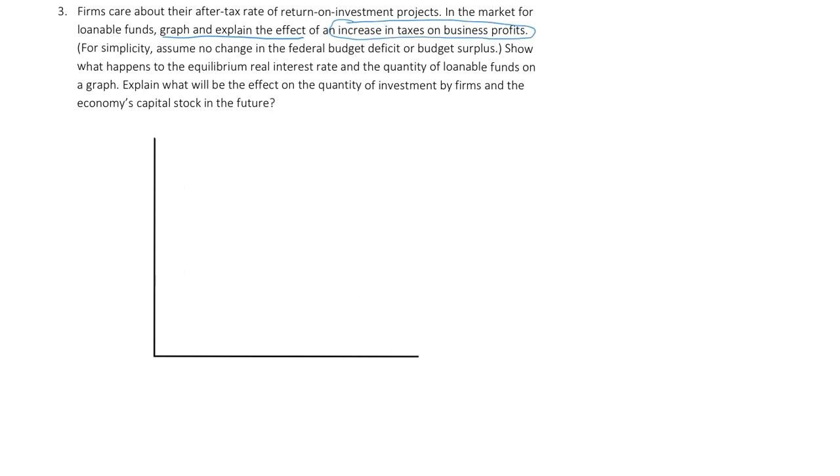I give my students kind of a checklist. The first thing is show the initial equilibrium. So it's the real interest rate and the quantity of loanable funds. Real interest rate R, quantity of loanable funds QL. And we know the initial demand for loanable funds is downward sloping. Supply for loanable funds is upward sloping.